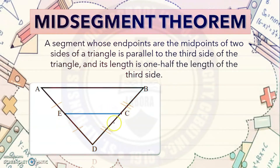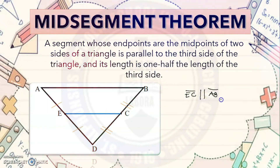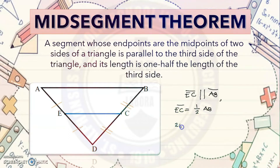So if segment EC has its endpoints at the midpoint of each side of the triangle, we can say that EC is parallel to AB and the measure of EC is one half the measure of AB, or equivalently, two times EC equals AB. Those are the three important theorems of this topic.